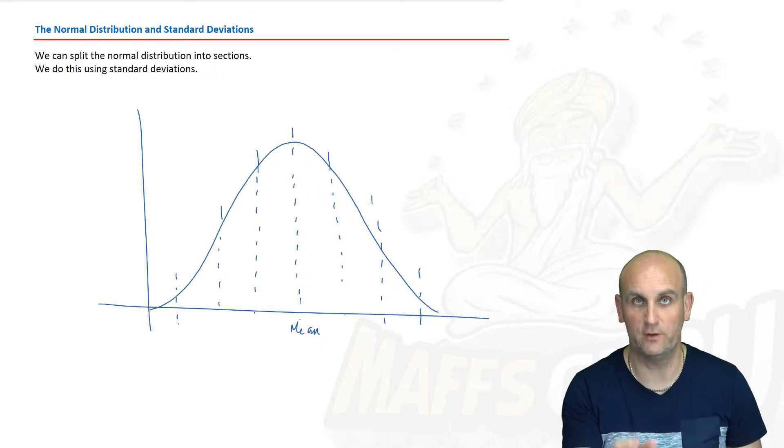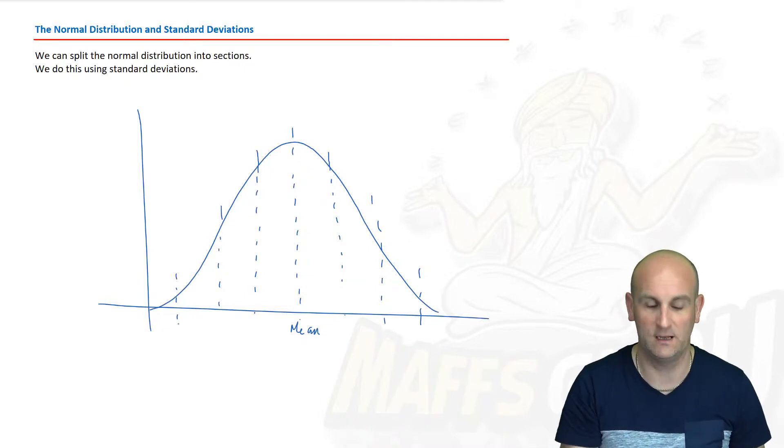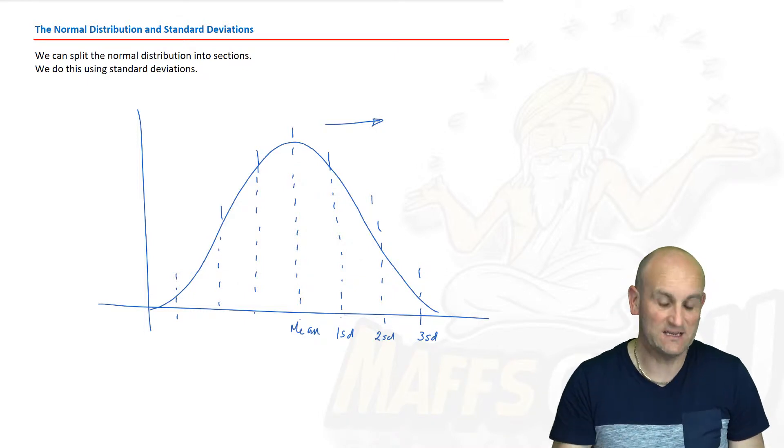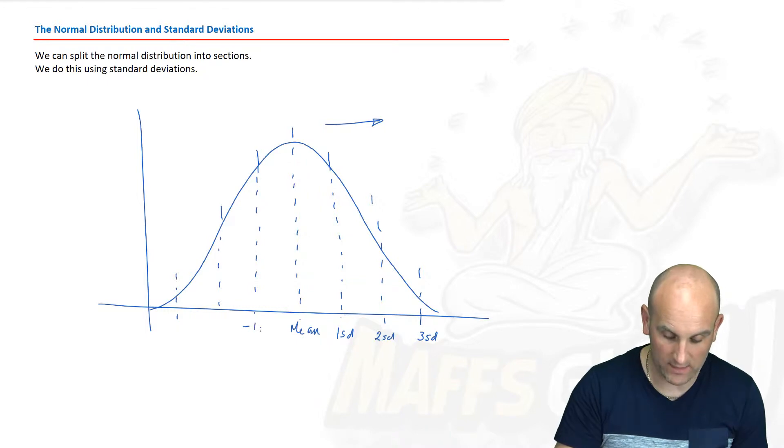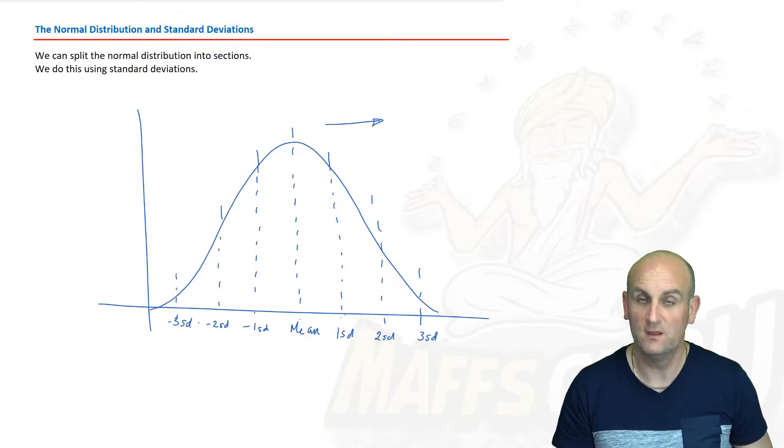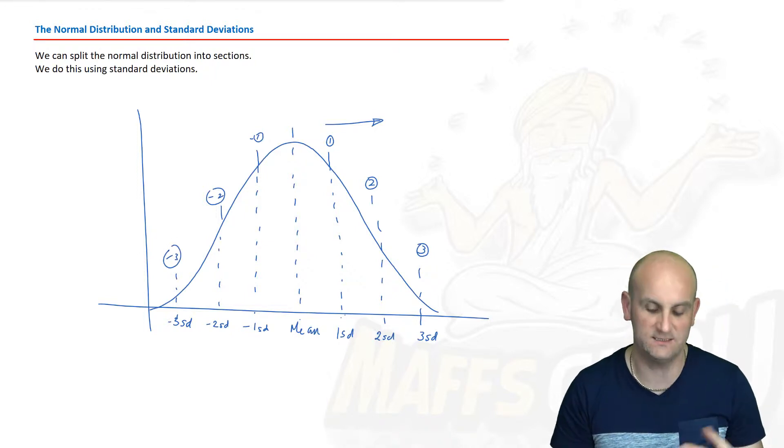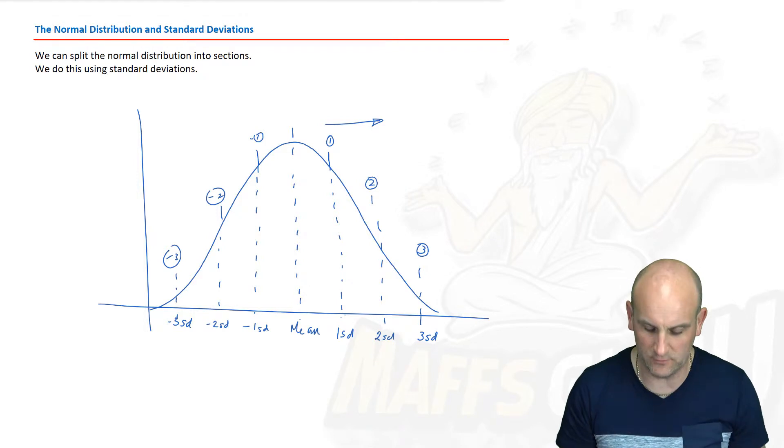Everywhere I've drawn a dotted line there is one standard deviation away from the mean. Now the language there is really important: one standard deviation away from the mean, two standard deviations away from the mean. We have a negative direction here as well. So this is minus one standard deviation, minus two standard deviations, and minus three standard deviations.